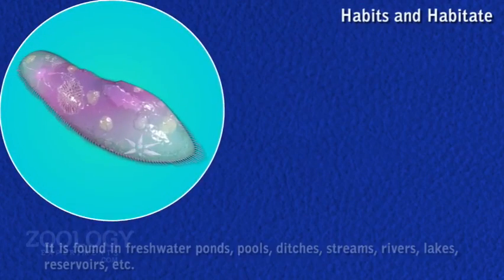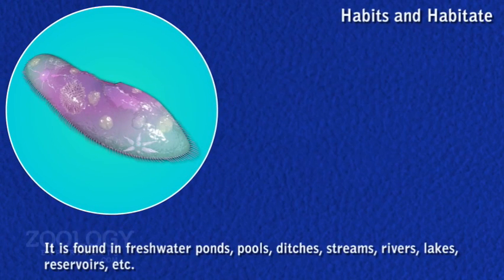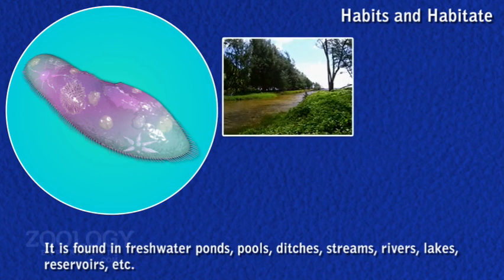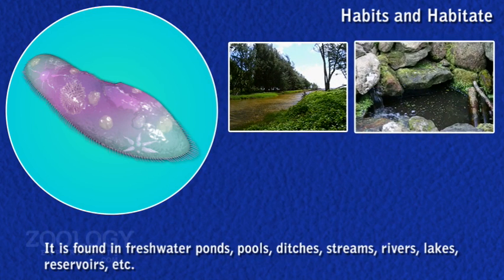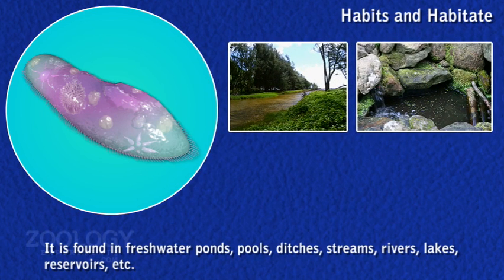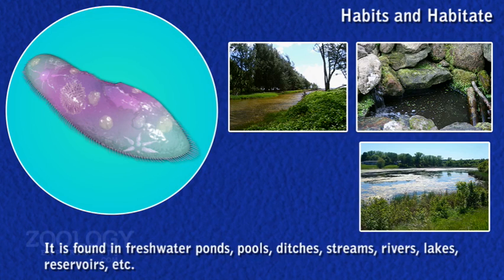Paramecium caudatum is one of the most common species of paramecium, having worldwide distribution. It is found in ponds, ditches, streams, rivers, reservoirs, lakes, pools, and any freshwater habitats.